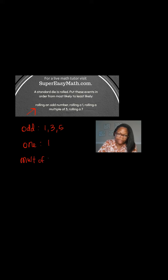What's the probability of rolling a one? There's only one one, so there's only a one out of six chance of getting it. What's the probability of rolling a multiple of three? That would just be the three and the six, so there are two possible choices that could give me a multiple of three.